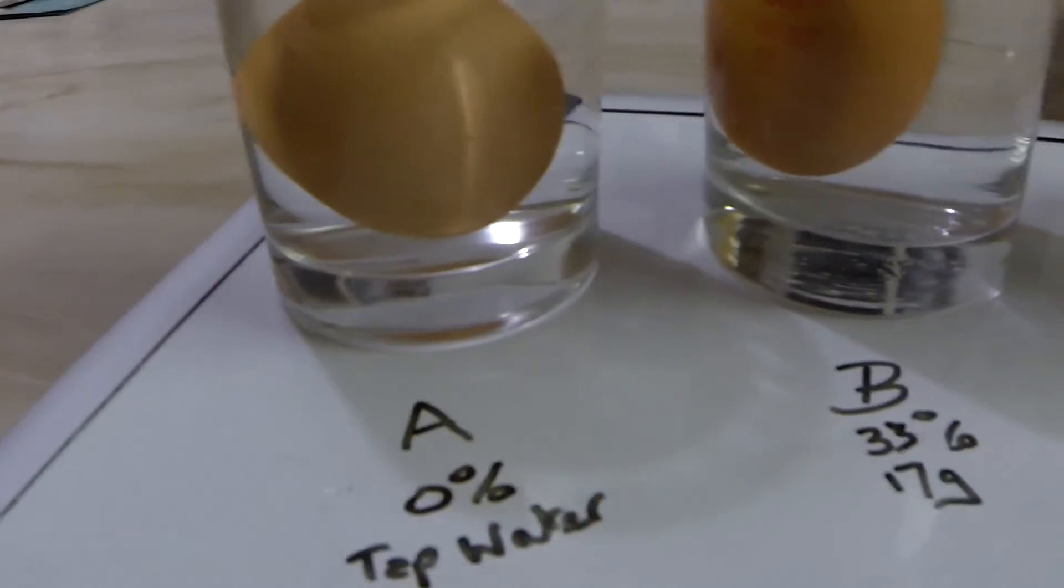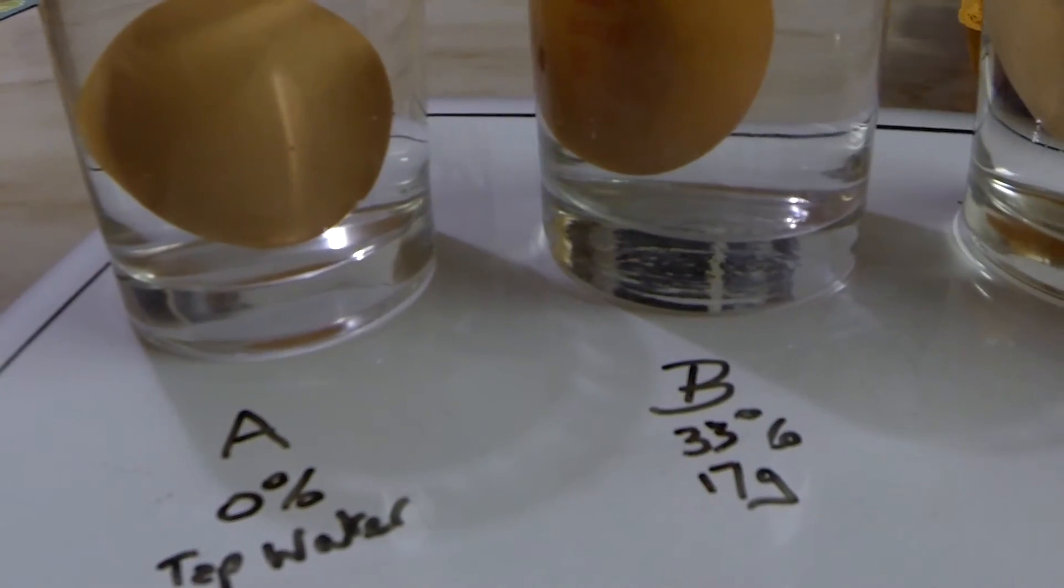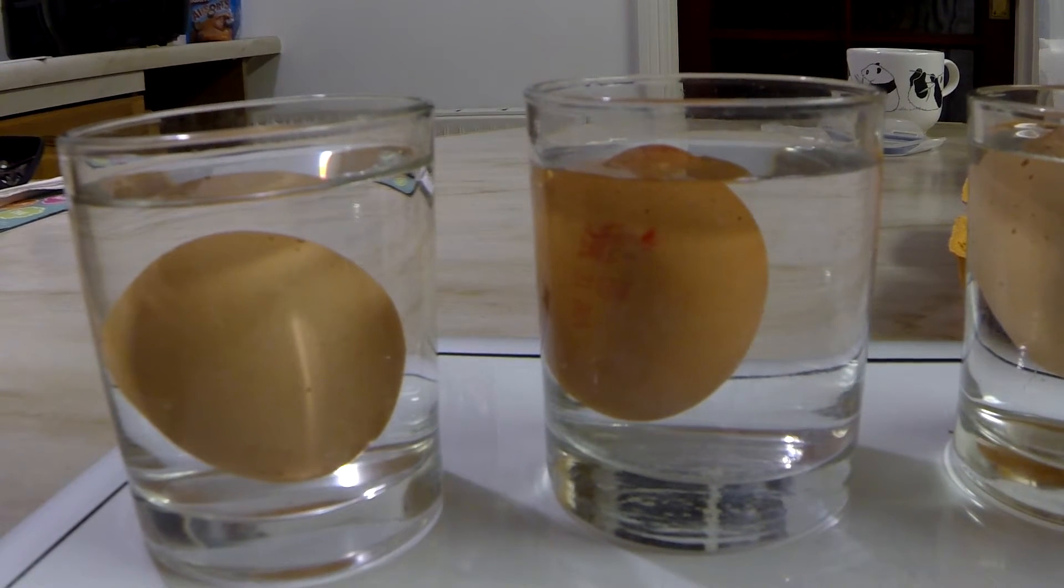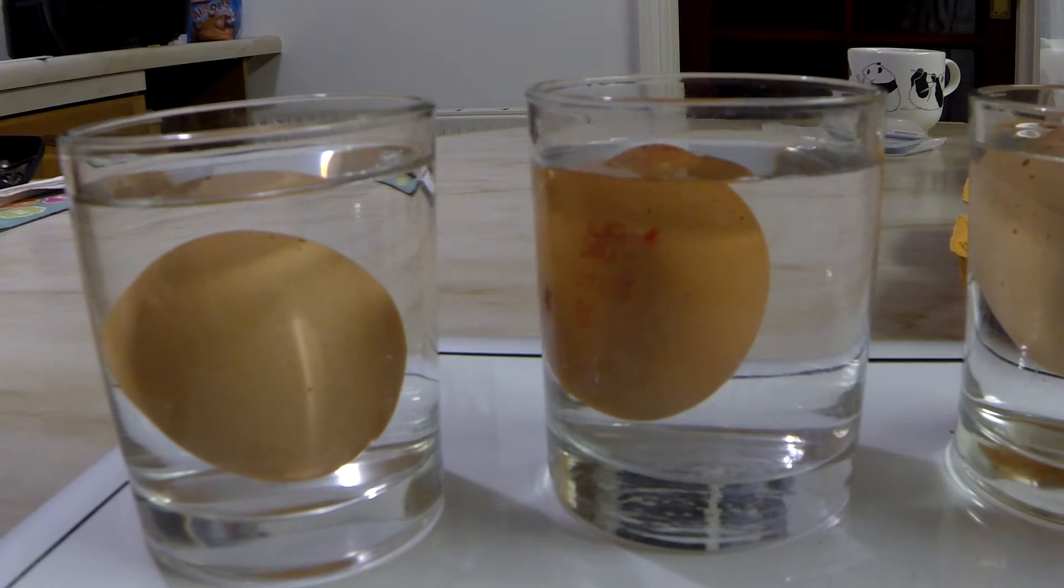So look at glass B, which has 33% saturation. There's a little bit poking out the top of the water there. So it's definitely floating, but only just.